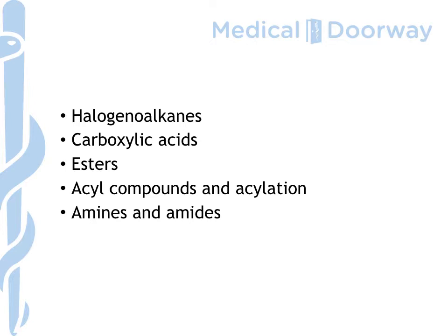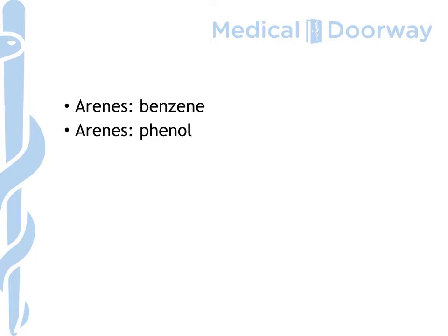We'll look at amines and amides. We'll also look at some aromatic chemistry, starting with benzene and then moving on to phenol. Some A-level boards these days miss out phenol, which is a bit of a shame, because it is a crucial chemical in a lot of industrial synthesis. It's also a very interesting chemical in its own right, and you'll need to know it for these exams.